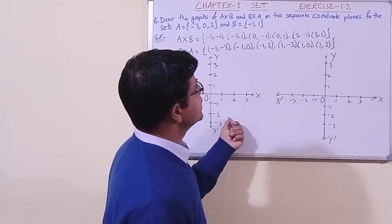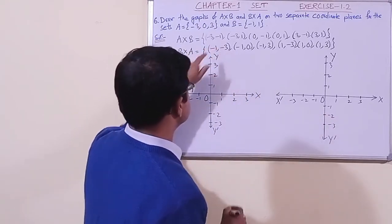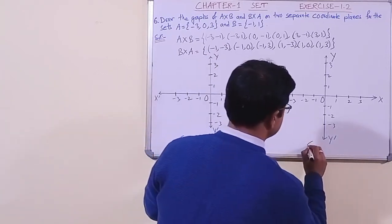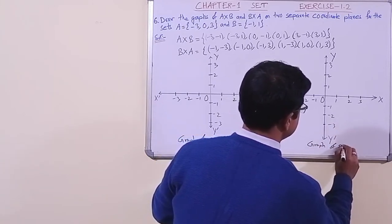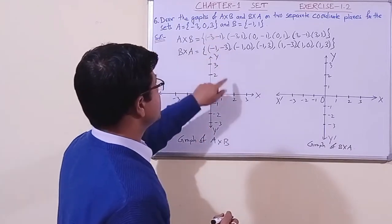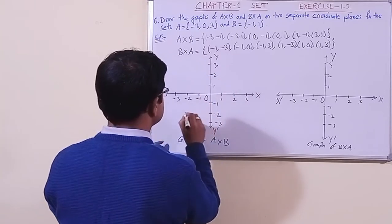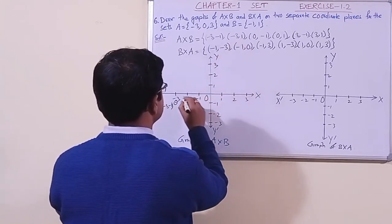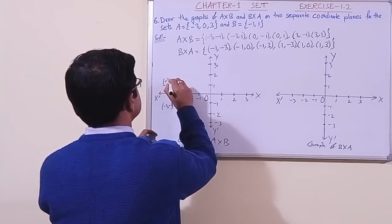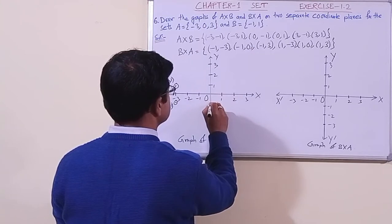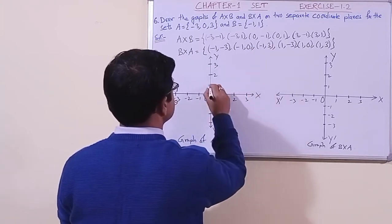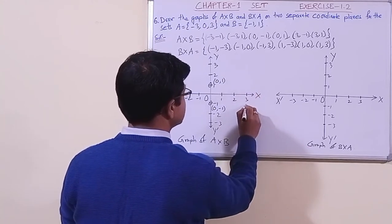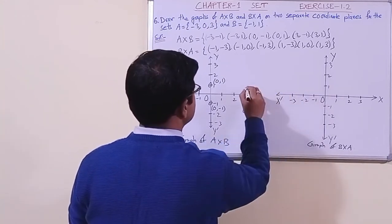We have drawn the coordinate planes. The first plane is for the graph of A cross B and the second for B cross A. We plot the points: minus 3 minus 1, minus 3 one, 0 minus 1, 0 one, 3 minus 1, and 3 one. In this way we have drawn the graph of A cross B.